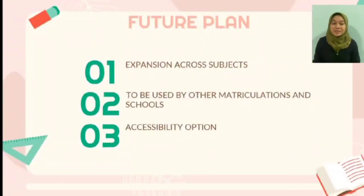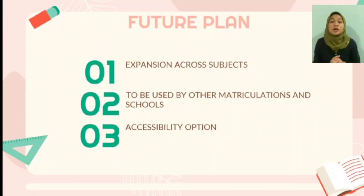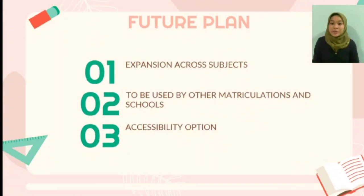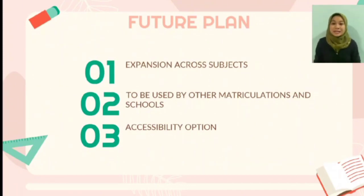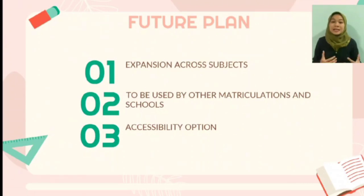Here are some future plans for VASPIN. First is expansion across subjects — we hope VASPIN will expand beyond physics to cover other STEM subjects such as chemistry, biology, and mathematics, providing a comprehensive and immersive fun learning experience. Second, we aim for VASPIN to be used across other matriculation colleges and schools nationwide, adopted by educational institutions as a go-to resource for interactive learning. Third is an accessibility option, which includes customizable difficulty levels, adjustable text size on the roulette board, and options such as a cheat card to make the game accessible to all players. Thank you for your time and attention.